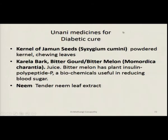Let us see Yunani medications for diabetic cure. The common herbs used are the kernel of jaman seeds — Syzygium cumini — which are powdered kernels, and chewing the leaves also helps. Then Karela bark — bitter gourd or Momordica charantia — where the juice and bark are used. Bitter gourd has the plant insulin polypeptide-P, a biochemical which is useful in reducing blood sugar. Tender neem leaf extract is also used. These three are used in different combinations and different ratios depending upon the person, as the medication ratio depends on the unique individual to whom it is given.